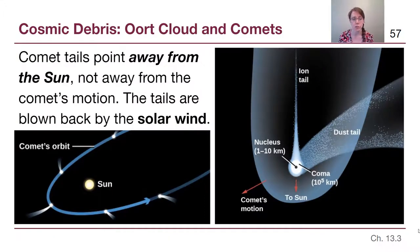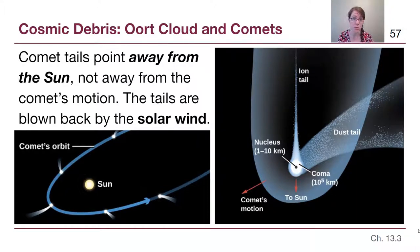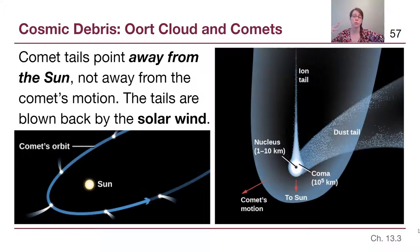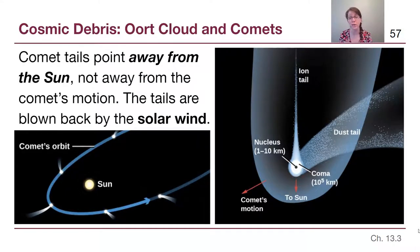As a reminder, comet tails point away from the Sun because of the solar wind. The Sun, as discussed in Chapters 15 and 16, has this constant outflow of charged particles called the solar wind. Earth's magnetic field protects us from that, and comet tails helped us study the solar wind.